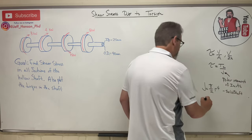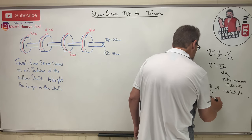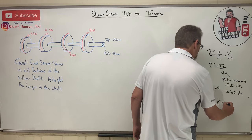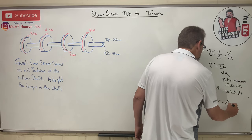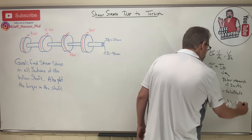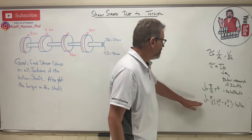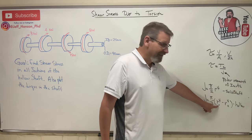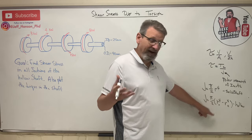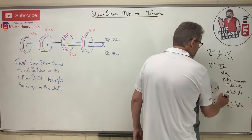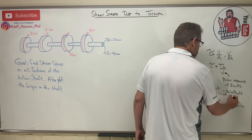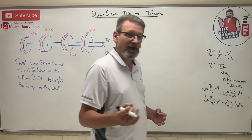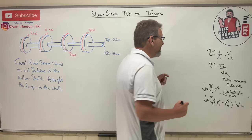If you have a hollow shaft, J = π/2 × (r_outer⁴ − r_inner⁴). That's the polar moment of inertia. Since the radius is raised to the fourth power, the units on J will be inches to the fourth or millimeters to the fourth — the same units as the area moment of inertia.